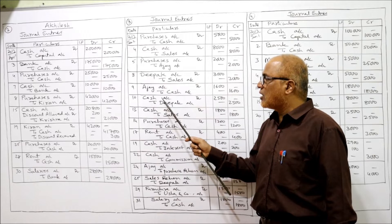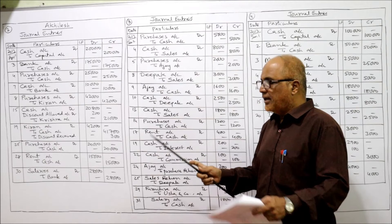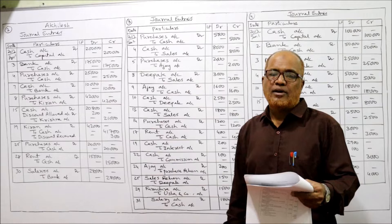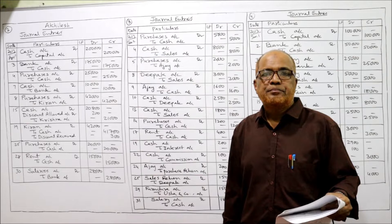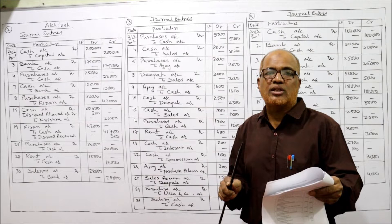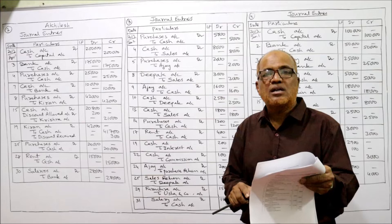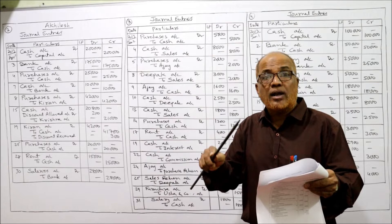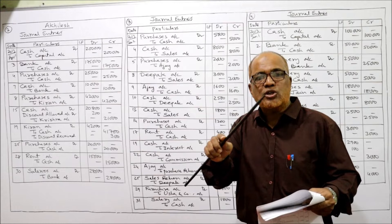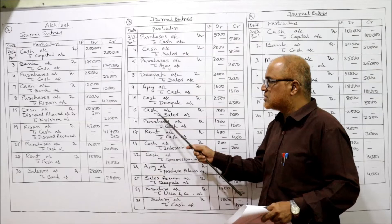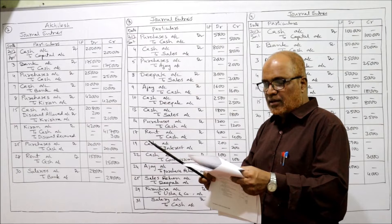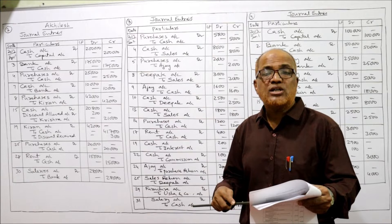10th: received check/cash from Deepak — cash is coming in, Deepak is the giver, so cash account debit to Deepak. Being cash received from Deepak. Next, 13th: sold goods to Ram for cash — when 'for cash' is given, we are not concerned with the customer's name. It means cash is coming in, so cash account debit to sales. 13th, being goods sold for cash. 14th: purchased goods from Gopal for cash — again 'for cash' is given, so we are not concerned with Gopal's name. Purchases account debit to cash.